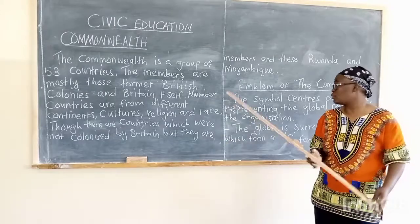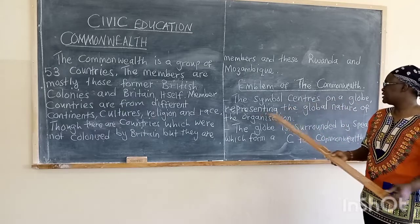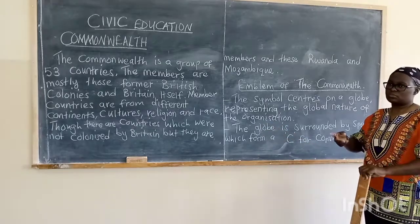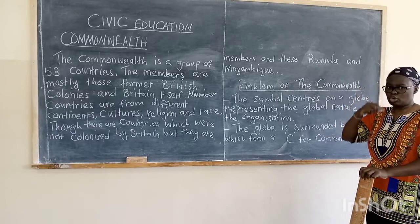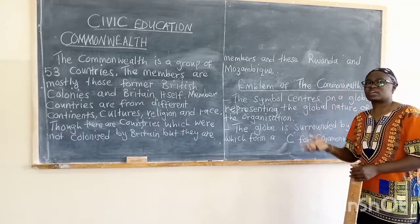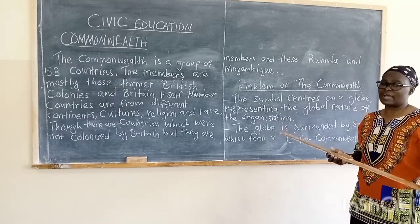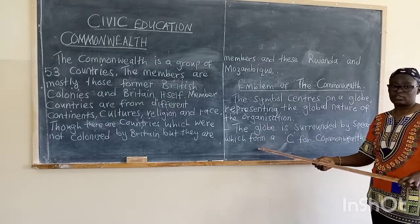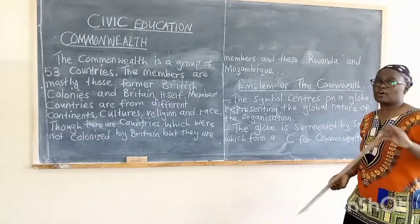Now let's look at the emblem of the Commonwealth. The symbol centers on a globe representing the global nature of the organization. When you look at the symbol — I will show you the picture — you will see that it has a C around the globe, symbolizing that former British colonized countries and any country that wants to join the Commonwealth is welcome, as long as they sign the charter. The globe is surrounded by spheres which form a C, standing for Commonwealth.